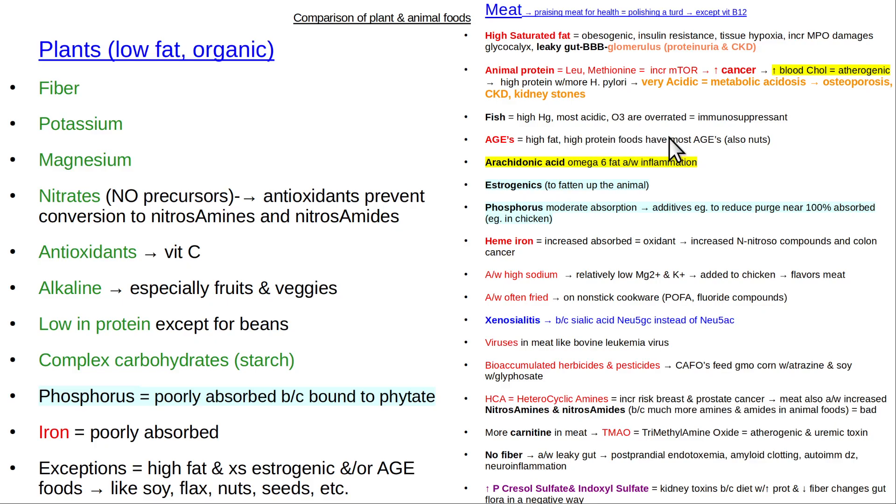And the so-called omega-3s are quite overrated. They're an immunosuppressant. I don't recommend O3 supplementation associated with increased risk of obesity, insulin resistance, atrial fibrillation, immunosuppression, prostate cancer. In animal studies, metastatic cancer, I think they're one of the most overrated things. And people are overdosing on them, especially the long-chain ones. You get enough omega-3s from your low-fat plant foods. Dr. McDougall has confirmed that, and other work has confirmed that, and Brian Peskin's work has confirmed that.